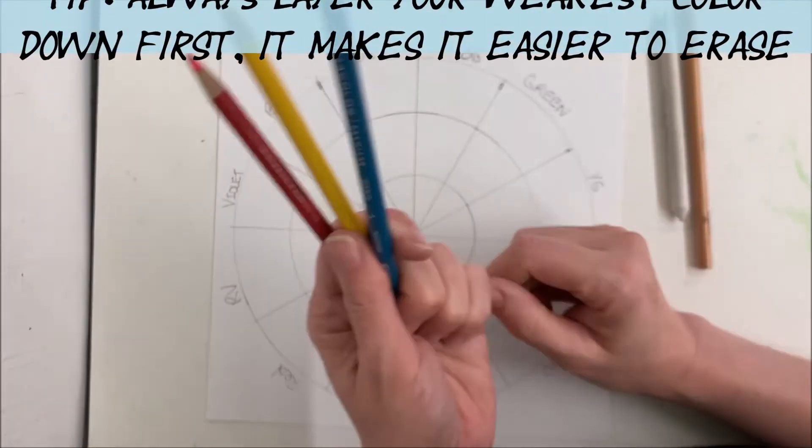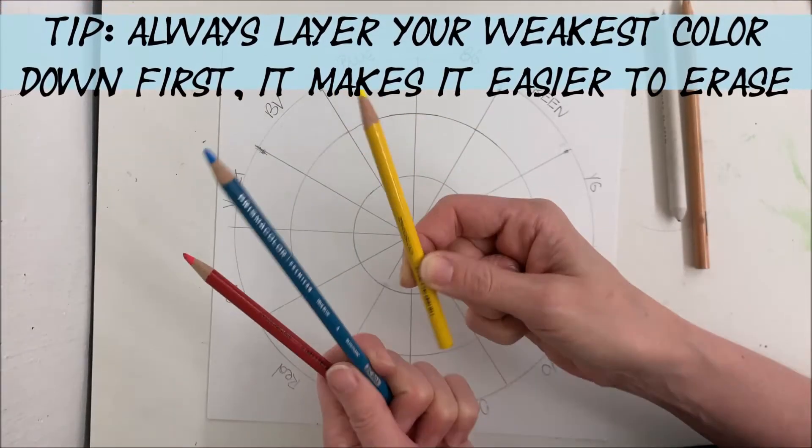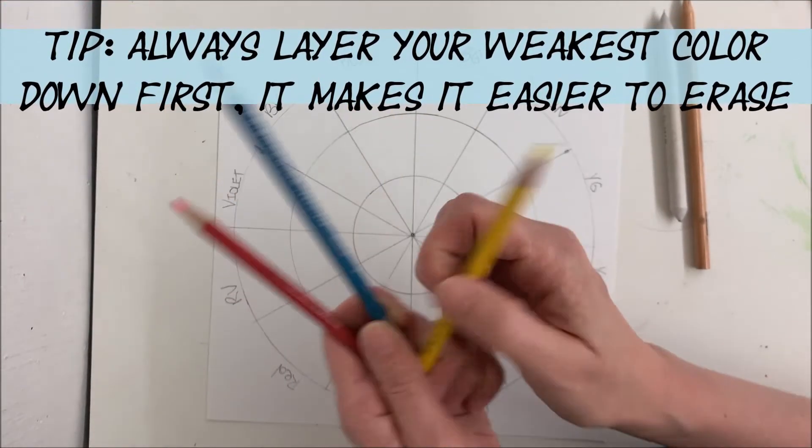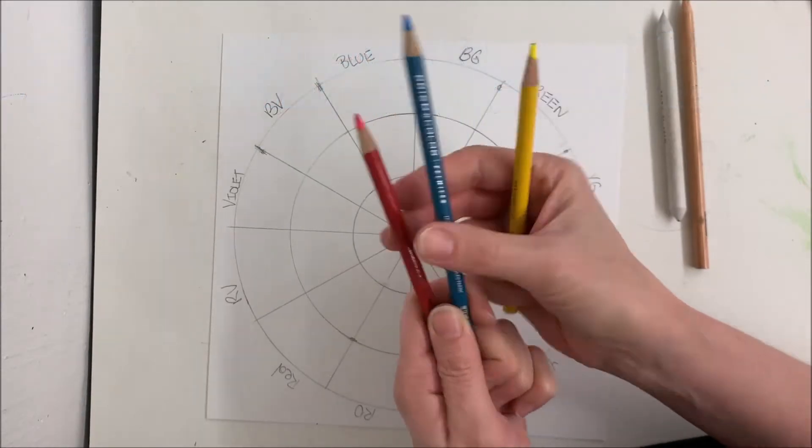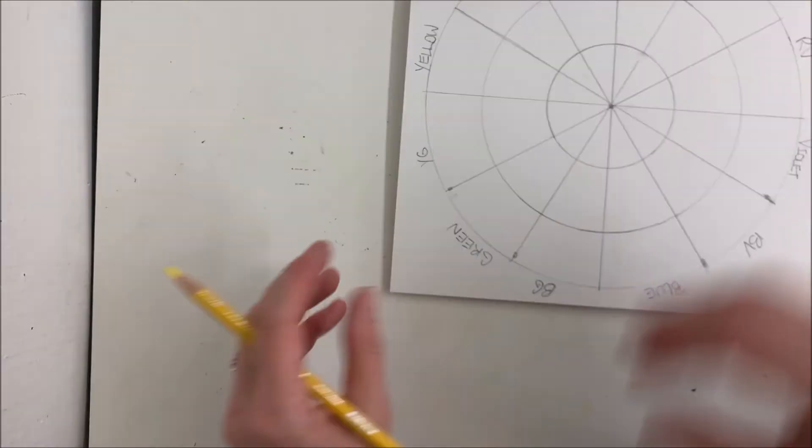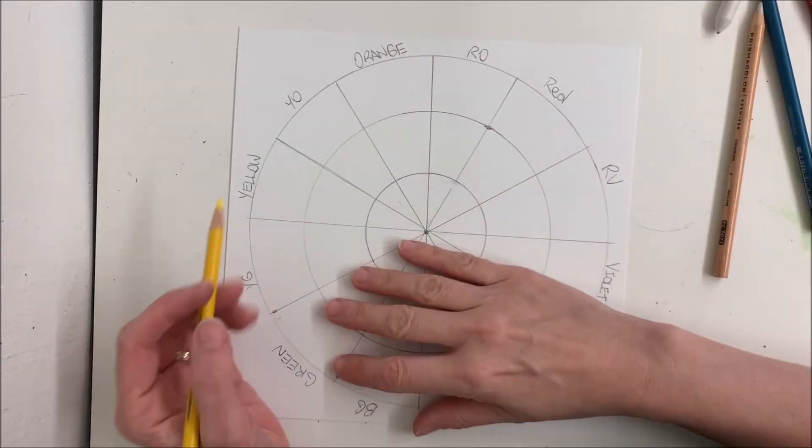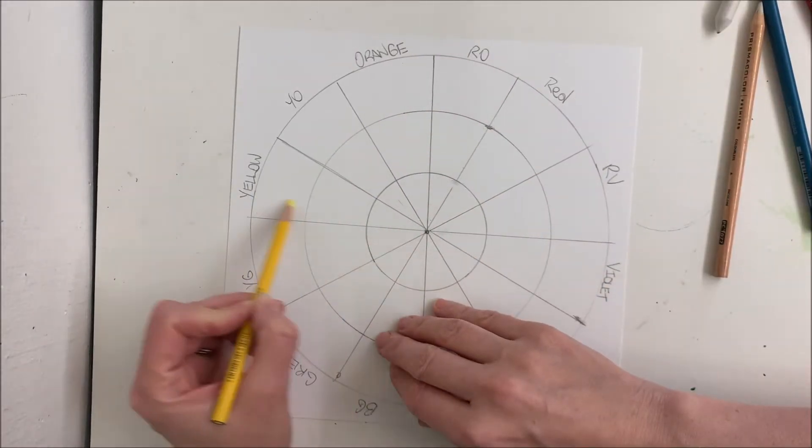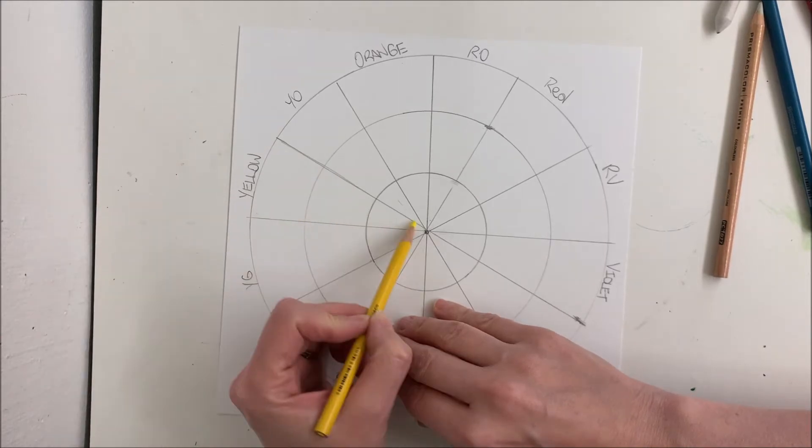When you're blending your colors, you always want to start with your weakest color. The weakest color in the primaries is yellow. Red and blue can be kind of equal to one another. So I'm going to start with yellow on my color wheel. I'm going to treat the whole wedge, not just each row.